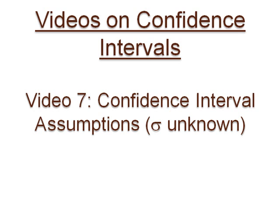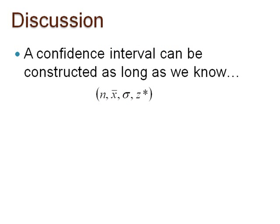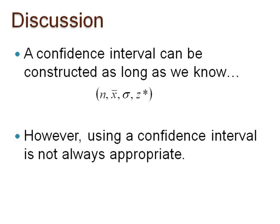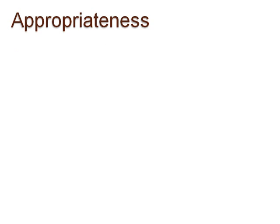Even though a confidence interval is a mathematical calculation that can be constructed as long as we know the sample size, the sample mean, the population standard deviation, and the confidence level, using this constructed confidence interval is not always appropriate. The appropriateness of the confidence interval built around one sample mean from one sample relies on the assumptions and conditions of the central limit theorem.